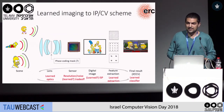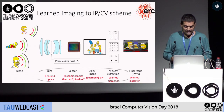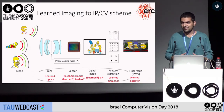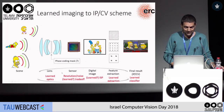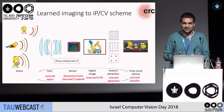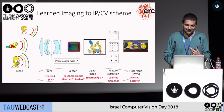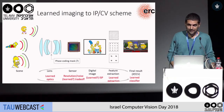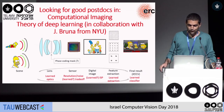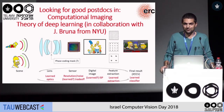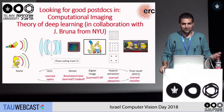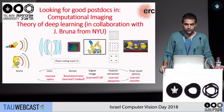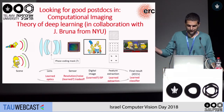To summarize, I believe that in this work we provide a new paradigm for designing optics. Until now in computational imaging, you change the optics based on some understanding of how things should be, and then use a neural network for reconstruction. Here we suggest letting the network learn both the optic parameters and the image or scene reconstruction together. One last note: I am looking for good postdocs in computational imaging, and also have an open position for theory of deep learning in collaboration with John Bruna from NYU. Thank you very much.